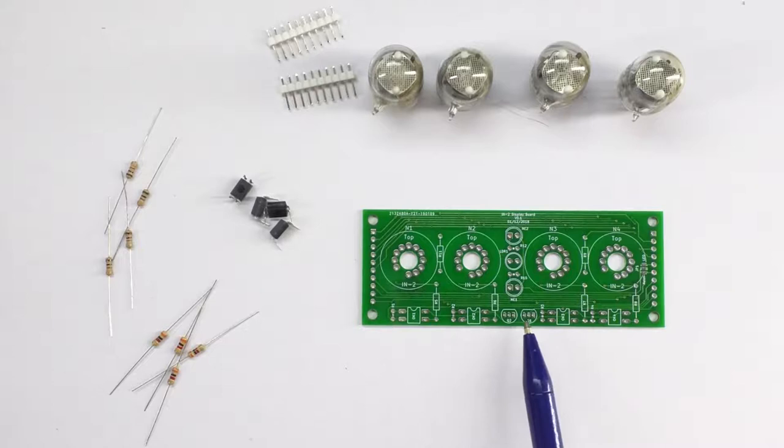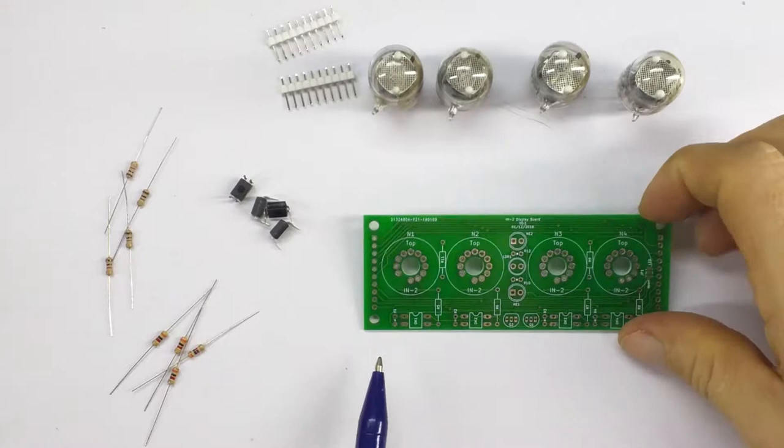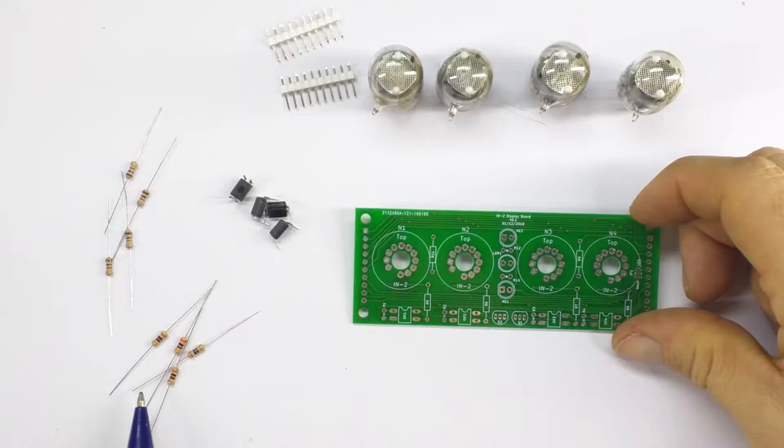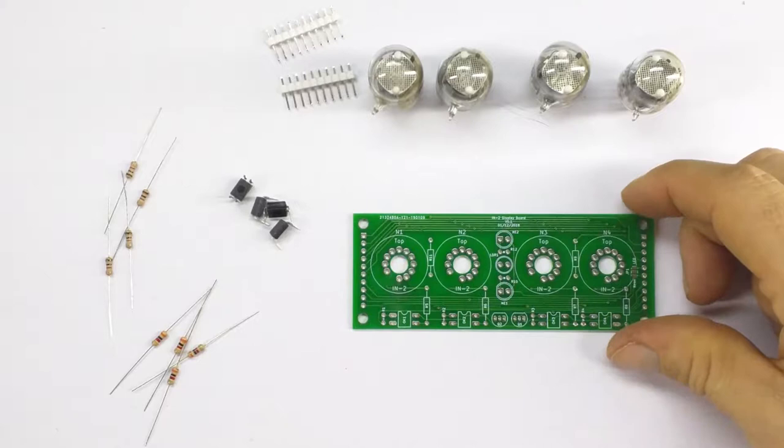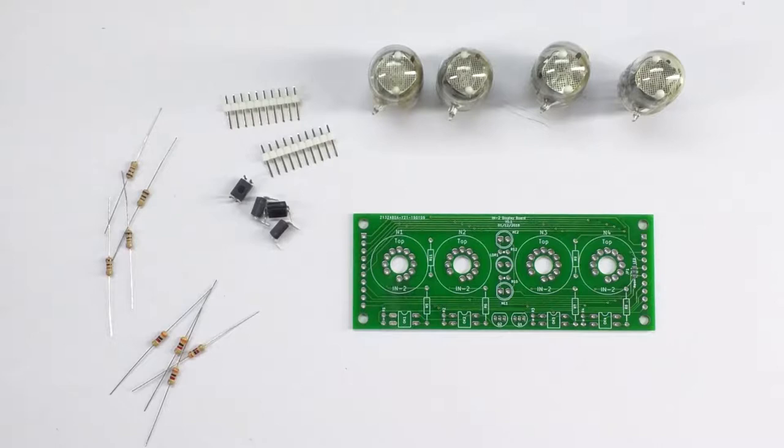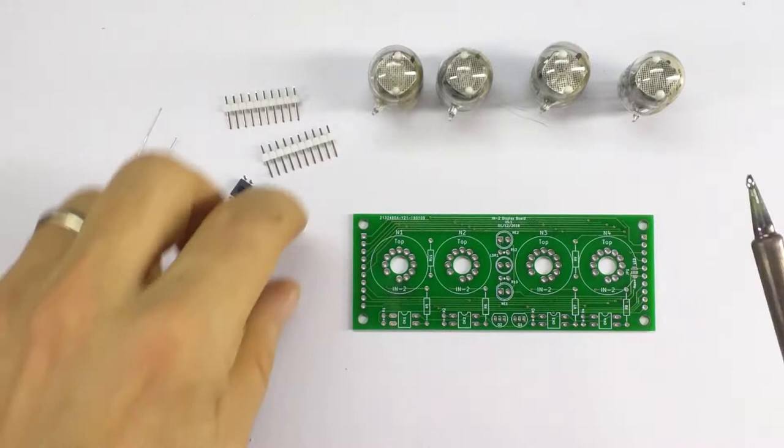So what we're going to need for this is four opto isolators, OK1, OK2, OK3, OK4. Four 1K resistors which go into the spaces next to them, R1, R2, R3 and R4. And four 3K resistors which go in R5, R6, R7 and R8. Also we're going to put the two connectors on and then we can give it a test with the main board.